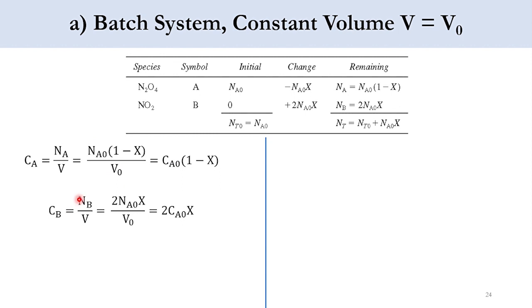For C_B, N_B over V, N_B is equal to 2N_A0 x, and N_A0 over V_0 becomes C_A0. So C_B is equal to 2 times C_A0 x.